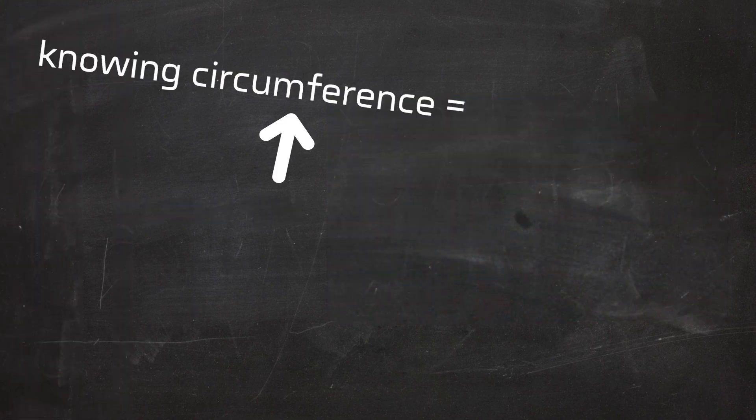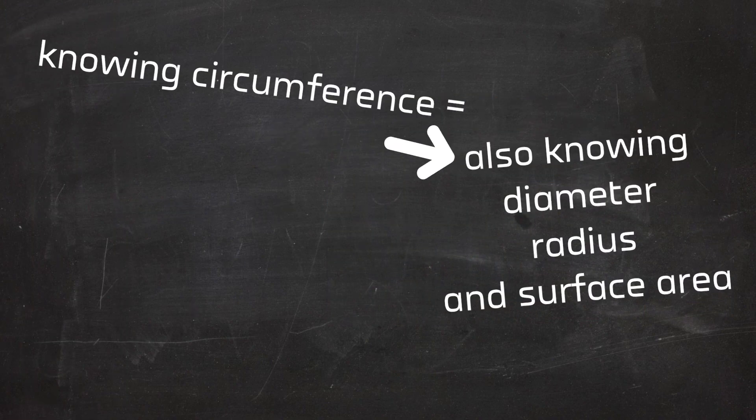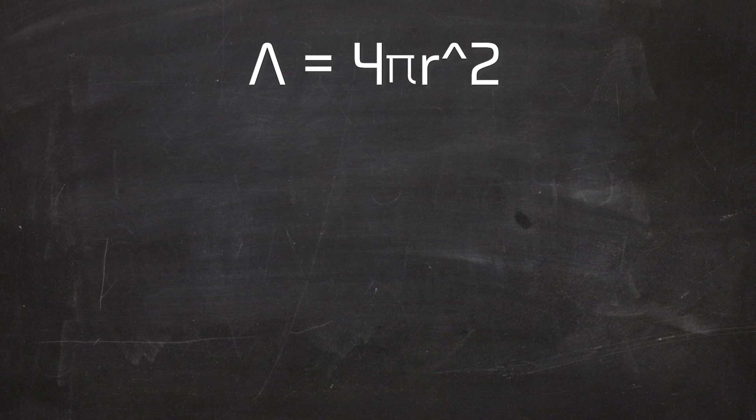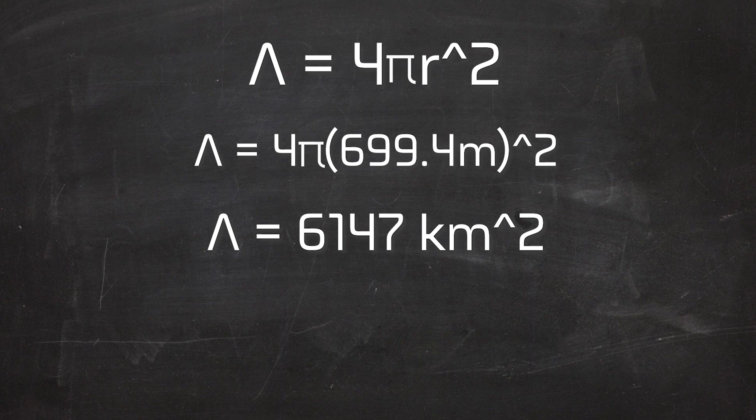Knowing the circumference, we can figure out EVERYTHING about this sphere. Using the equation C equals 2πr, we can get the radius of the planets, which is 699.4 meters. Now that we have the radius, we can figure out the surface area pretty easily using the equation A equals 4πr². The surface area we get from plugging all these numbers in is 6,150 kilometers squared, which is a very small planet. Can we even call these things planets anymore?